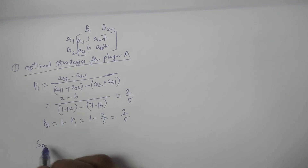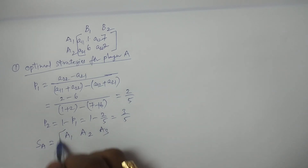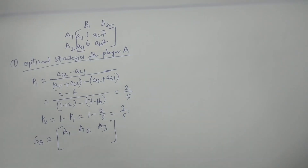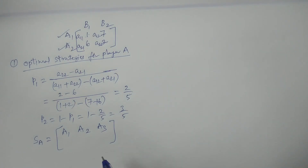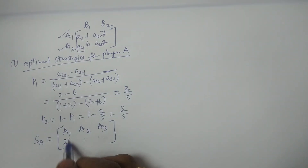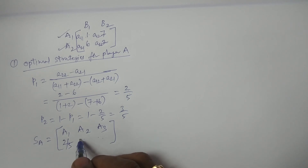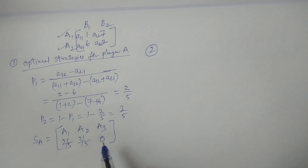Therefore, writing the optimal strategies for player A: the original problem has three strategies A1, A2, A3. Since P1 and P2 correspond to the remaining strategies A1 and A2, we write: A1 has probability P1 = 2 by 5, A2 has probability P2 = 3 by 5, and A3 has probability 0. These are the optimal strategies for player A.